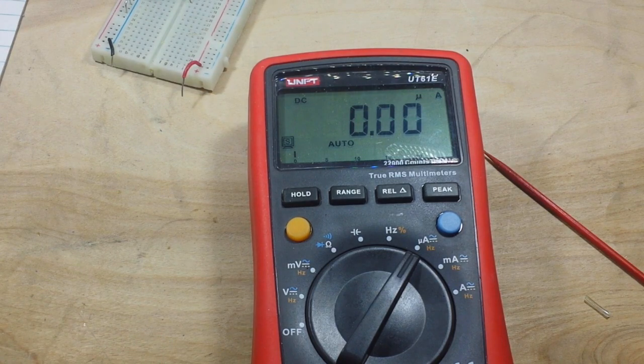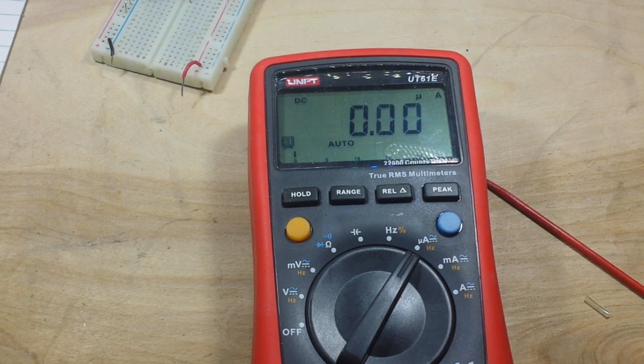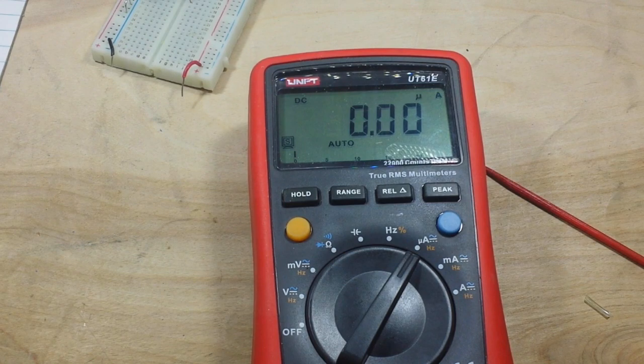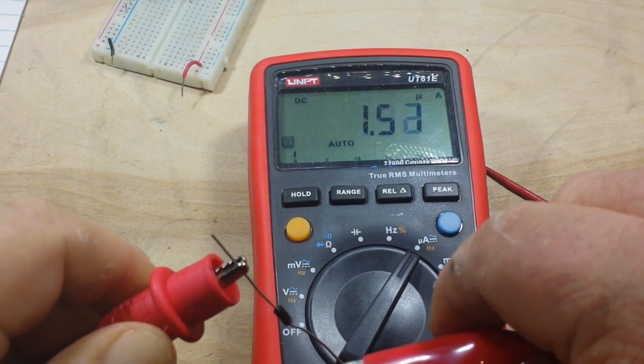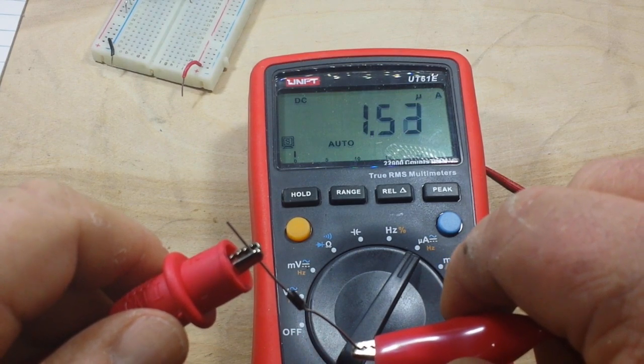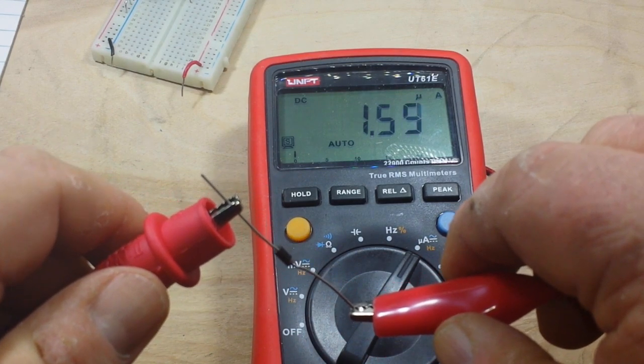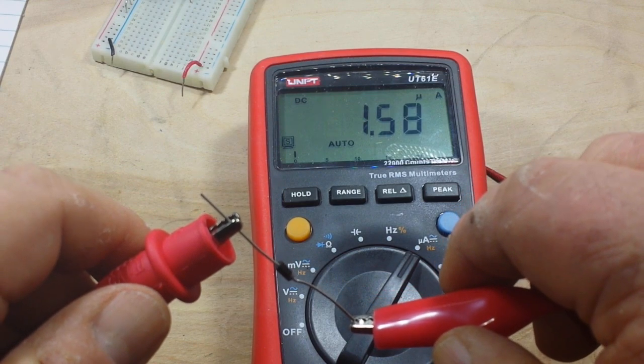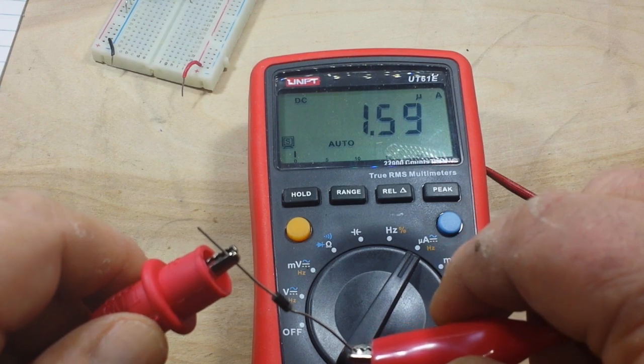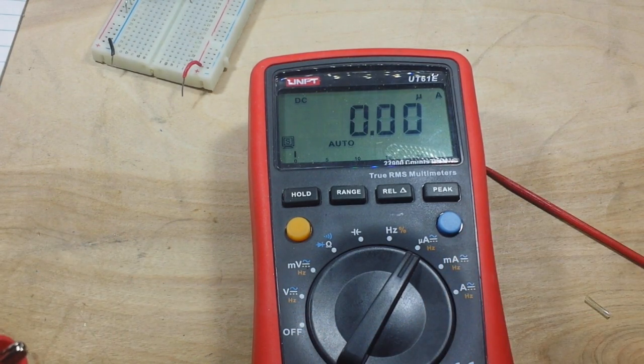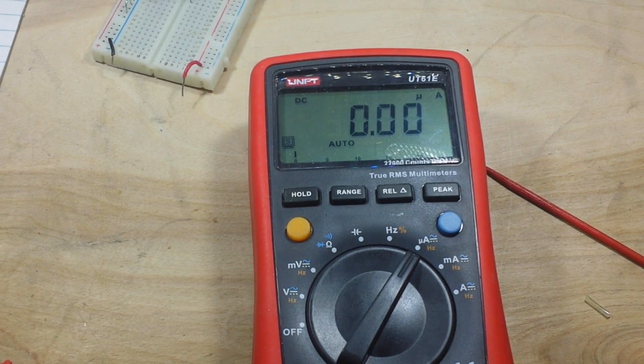All right, now, we're going to do the same thing with the Schottky diode. If I can manage to pick it up, okay, there we go. Now, look at that. With the reverse biased Schottky diode, we're getting reverse flow at five volts of 1.59 microamps. Doesn't sound like a lot, but it can be a lot.